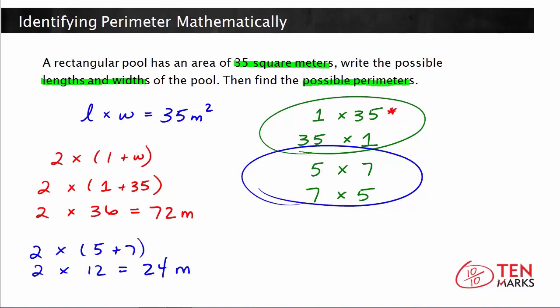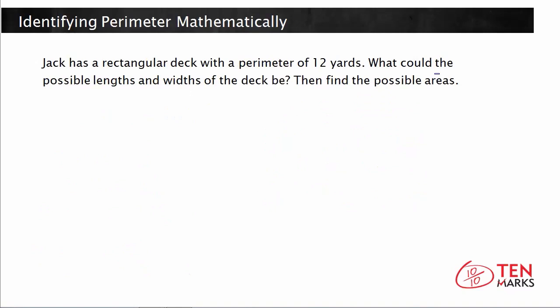Now let's try another problem together. Jack has a rectangular deck with a perimeter of 12 yards. What could the possible lengths and widths of the deck be? Then find the possible areas. Because this is a rectangle, you can use the formula 2 times the length plus the width, and we know from the problem that this must equal 12.